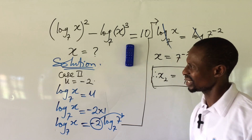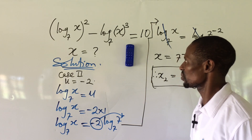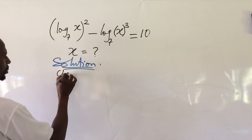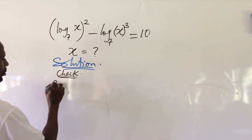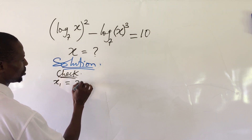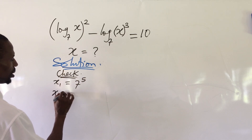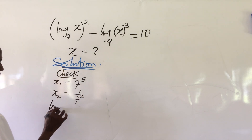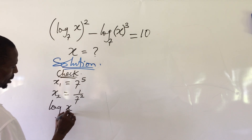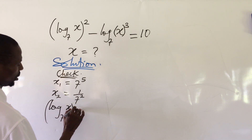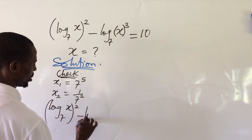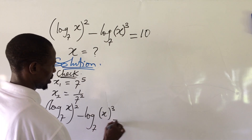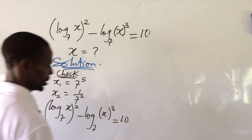Let's check if both answers satisfy the equation. Check: x₁ equals 7⁵ and x₂ equals 1 over 7². Taking x₁, we put down our equation: (log_x(7))² minus log_(x³)(7) equal to 10. Wherever we see x, we put in 7 to the power of 5.